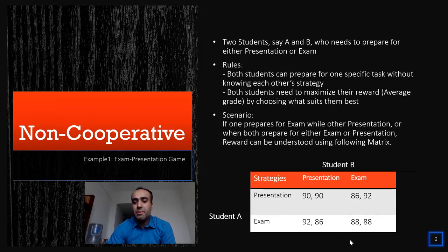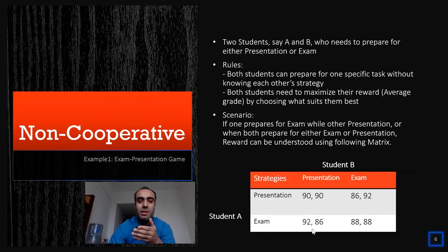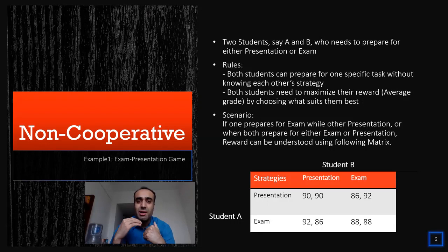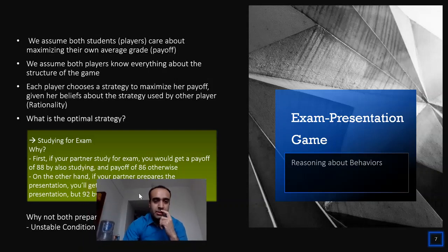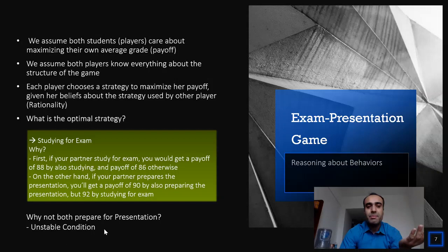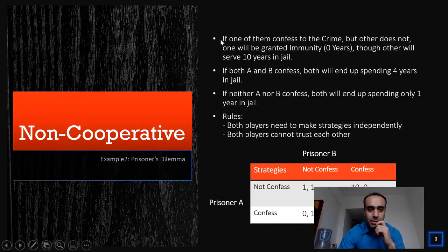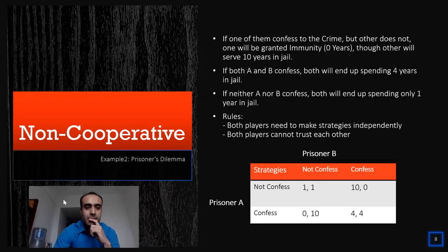Studying for the exam is better because if both prepare for the exam they get 88 average, but if one prepares for the exam while the other prepares for the presentation, the one preparing for the exam gets a higher payoff. Since both players care about their own payoff, both will try to get the higher payoff by studying for the exam. So the optimal strategy is studying for the exam, and studying for the presentation would be unstable.